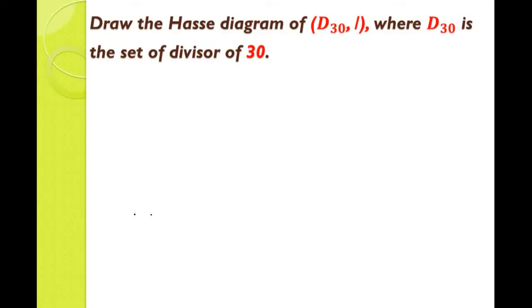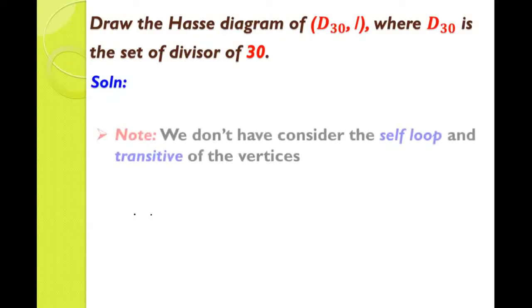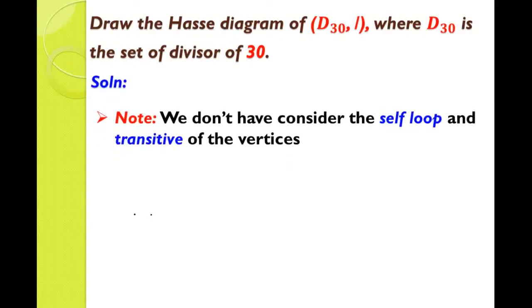For better understanding of how to draw the Hasse diagram of divisor 30, one more important point is: in the Hasse diagram, we do not consider the self-loop and the transitive edges of the vertices.